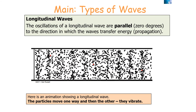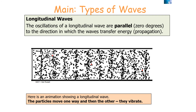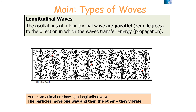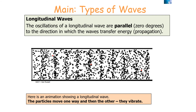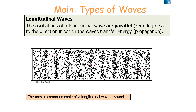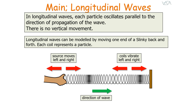Longitudinal waves are oscillations which are parallel to the direction in which the waves transfer energy. The particles themselves are only oscillating — moving backwards and forwards, vibrating — and do not move past their equilibrium position. The most common example of a longitudinal wave is sound. In longitudinal waves, each particle oscillates parallel to the direction of the wave, with no vertical movement. Longitudinal waves can be modeled by moving one end of a slinky back and forth, with each coil representing a particle.